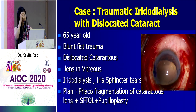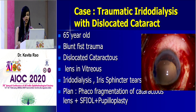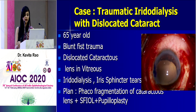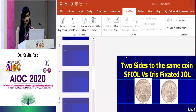Moving to the next case — a 65-year-old with blunt fist trauma to the eye. The patient has a dislocated cataractous lens in the vitreous. This is not a dilated pupil — this is how it appeared on presentation, with a completely damaged sphincter and iridodialysis with a cataractous lens in the eye. For obvious reasons, in this case we are going to perform an SFIOL with pupilloplasty.